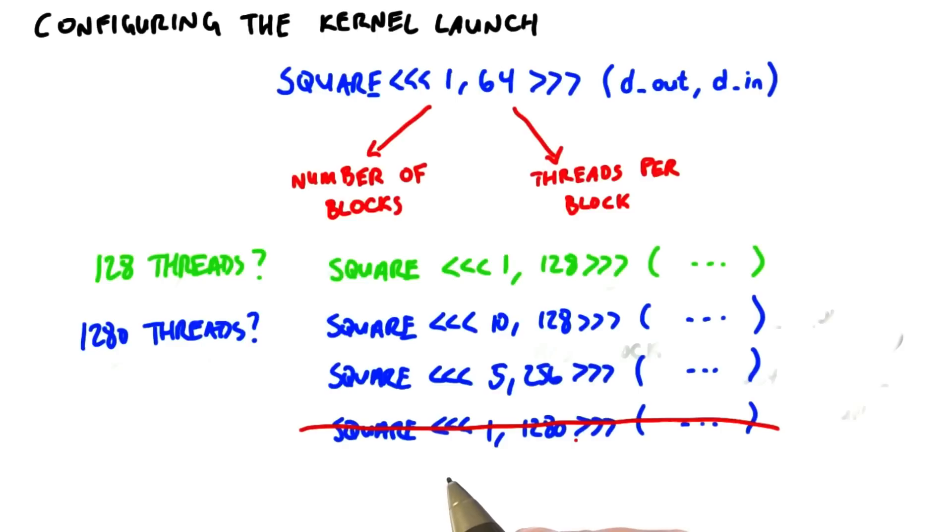As we saw before, each thread that we launch knows its index within the block, and you won't be surprised to hear that each thread also knows the index of its block as well. We'll see how we access this information in a moment.